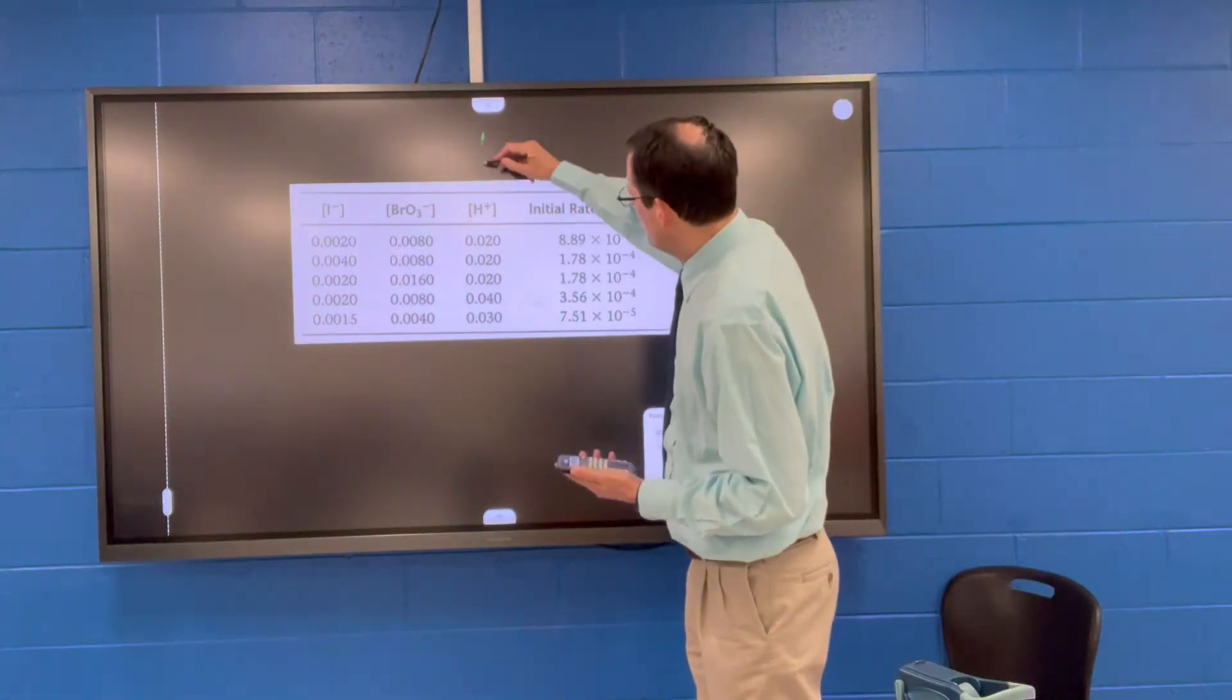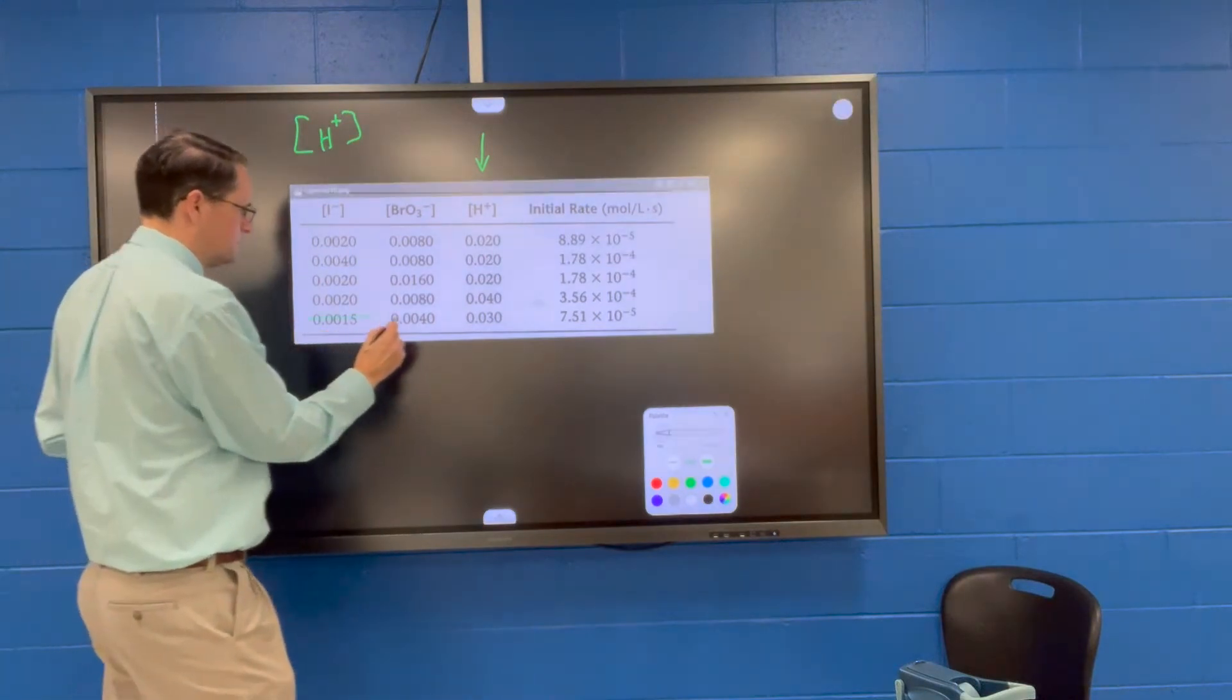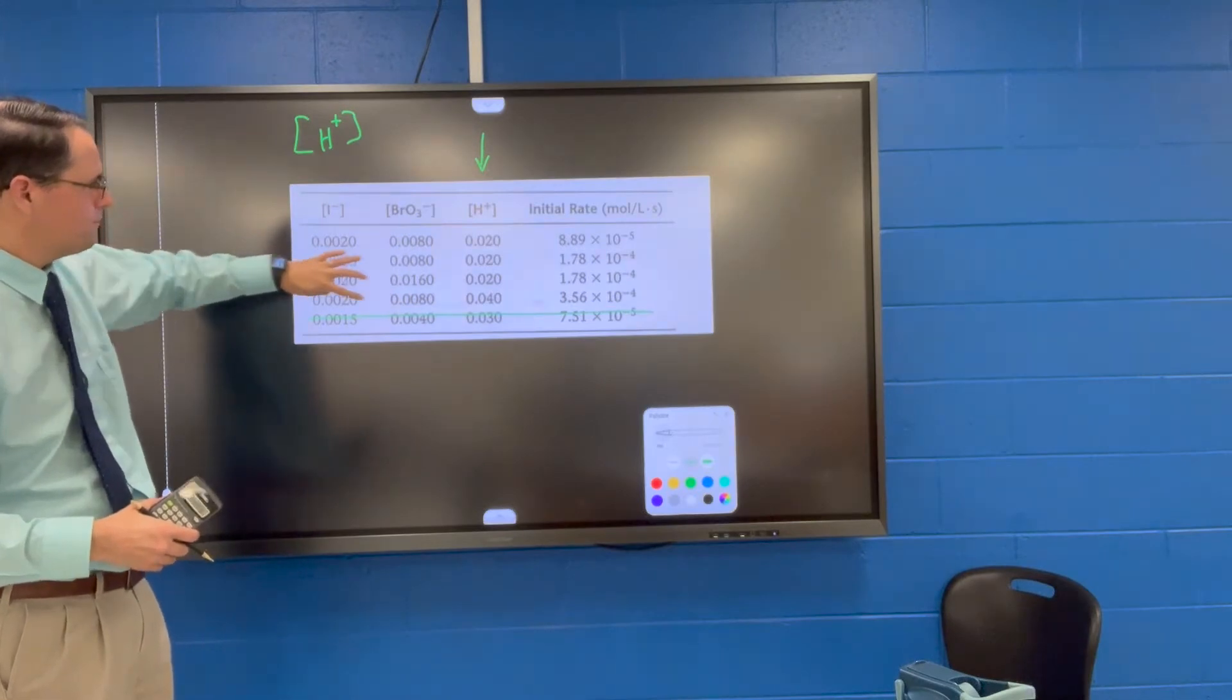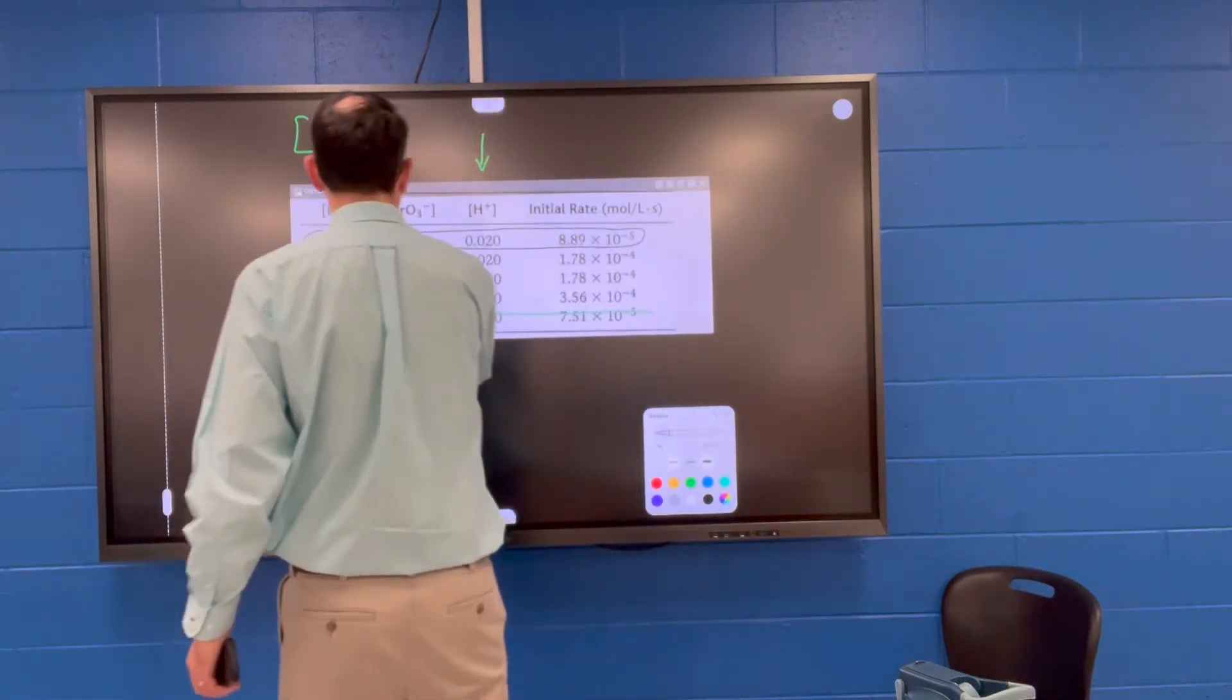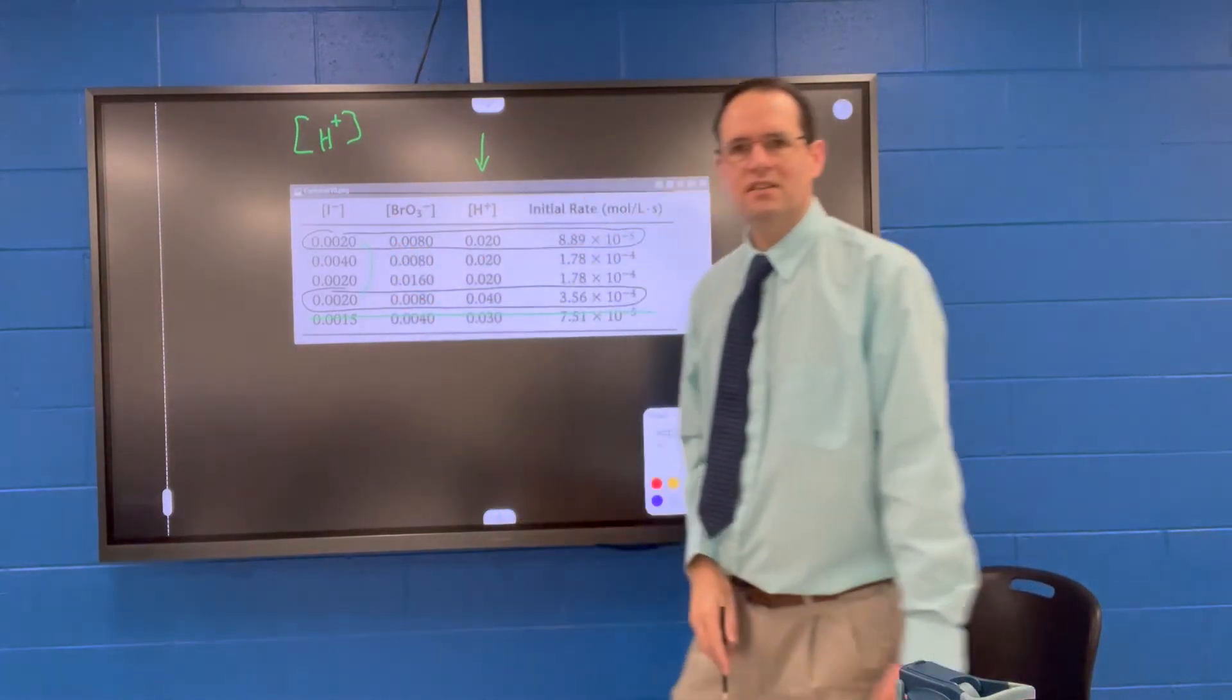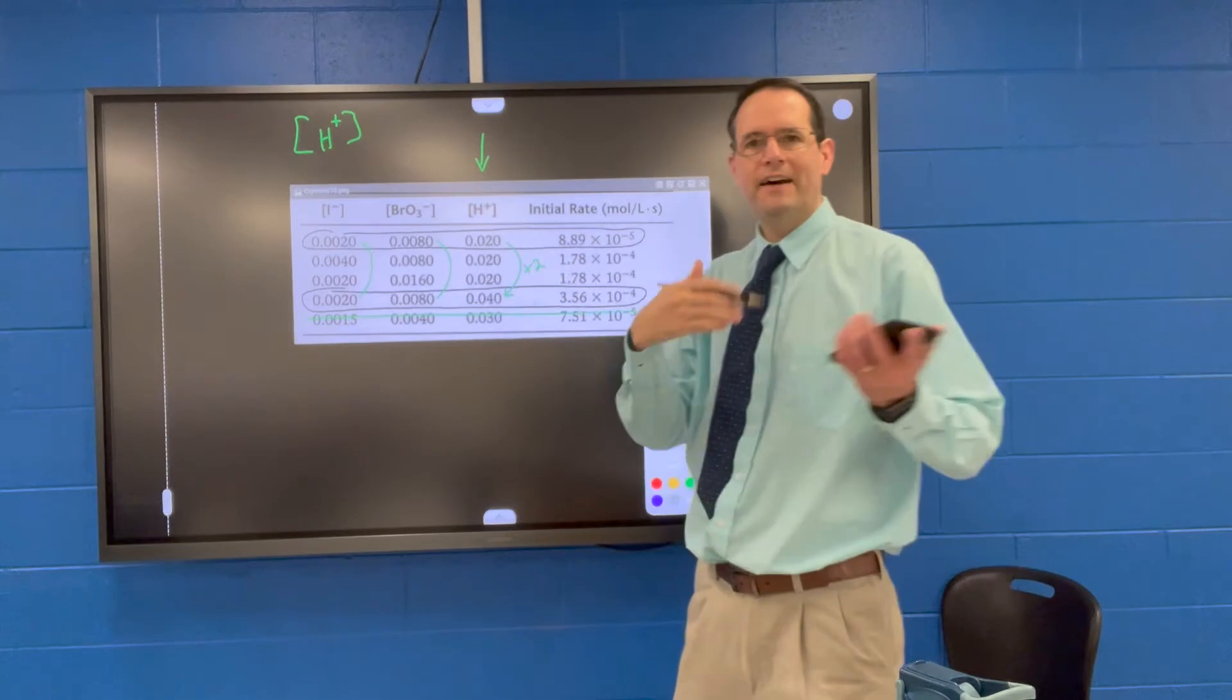We need to figure out what is the order with respect to the hydrogen ion. So we want to look to make sure we find one that's doubling from 0.02 to 0.04. We want to make sure we find the other experiments where it's the same. And I've identified a pair. In experiments one and four, we see that the iodide concentration is the same. We see that the bromate concentration is the same. The only concentration that is changing is the hydrogen ion concentration. It's going up by a factor of two times two.